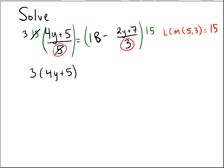On the right-hand side, we have to do a little distributive property. In the first case, the 15 times the 18 would yield the number 90. In the second case, we have 15 dividing by 3 to leave a 5, and that's being multiplied against 2y plus 7.